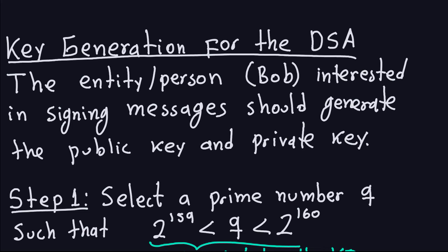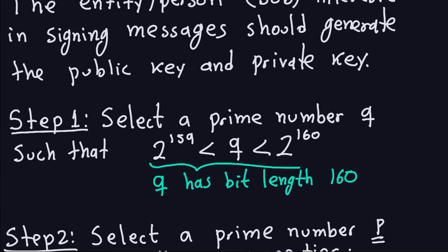Step one of the algorithm: select a prime number Q such that 2^159 < Q < 2^160. This ensures that Q has a bit length of 160. Saying Q is between those two powers of two is equivalent to saying Q has a bit length of 160.